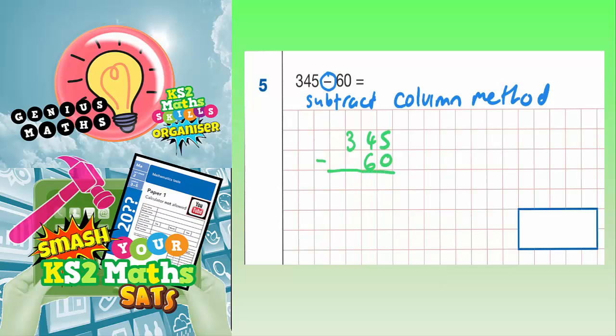Let's draw a couple of lines there ready for our answer, and now we're in a position to work it out. Always start with the top number and always start at the end of the number on the right-hand side. So 5 subtract 0 is 5.